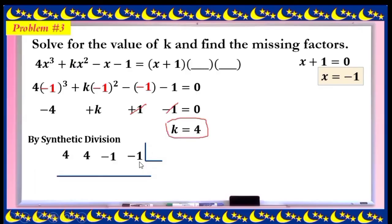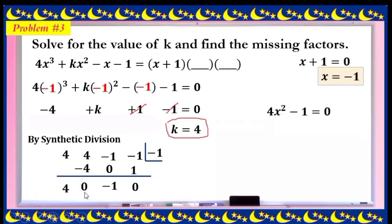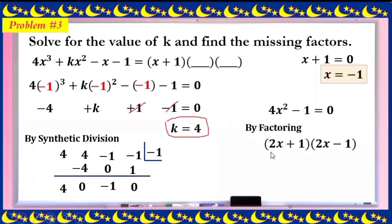With k = 4, the polynomial is 4x³ + 4x² - x - 1. Using synthetic division with x = -1 (from factor x + 1): bring down 4, multiply by -1 gives -4, add 4 = 0, multiply by -1 gives 0, add -1 = -1, multiply by -1 gives 1, add -1 = 0. Remainder is 0, confirming x + 1 is a factor.